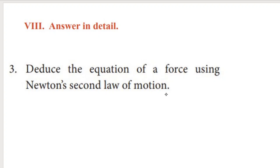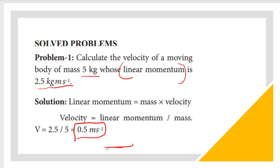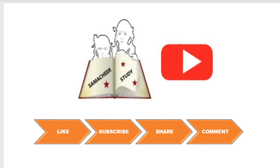Now let's solve a problem: Calculate the velocity of a moving body of mass 5 kg whose linear momentum is 2.5 kg·m/s. Using the formula p = mv, velocity equals linear momentum divided by mass. Substituting: velocity equals 2.5 divided by 5, which equals 0.5 m/s. Hope you understand the concept of Newton's Second Law of Motion and its derivation. Please subscribe and share the video with your friends. Thank you so much for watching.